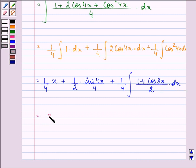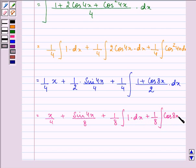Further, x by 4 plus sin 4x by 8 plus 1 by 8 into integral of 1 into dx and cos 8x dx.